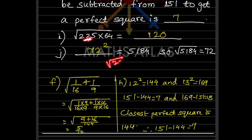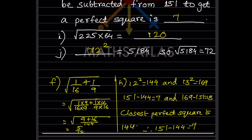Next, √225 × √64 = 15 × 8 = 120. For the blank such that dash = 5184, taking the square root of 5184 gives 72, so squaring both sides gives 72² = 5184.